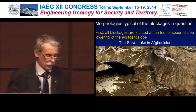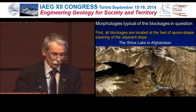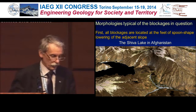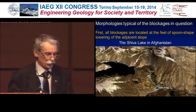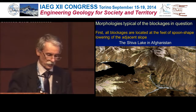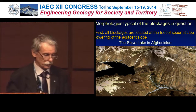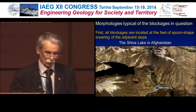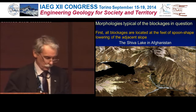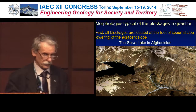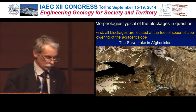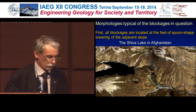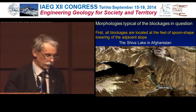What morphologies are typical of the blockages in question? First, all of them are located at the feet of spoon-shaped lowerings in the adjacent slope. Here is the well-known Shiva lake in Afghanistan, in Afghan-Badakhshan, close to the Tajik-Pamir border. We can see a good example of the spoon-shaped lowering just above this dam.